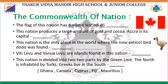The second clue: this nation produces a large amount of gold and cocoa, and Accra is its capital — this nation is Ghana. The third clue: this is the only place in the world where the now-extinct bird dodo was found — this place is Mauritius.